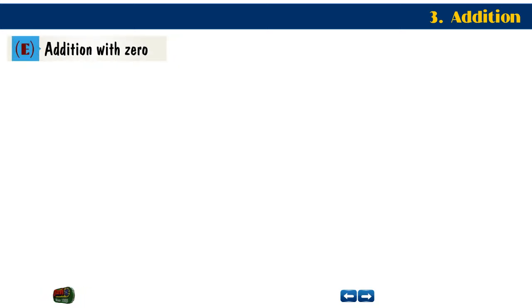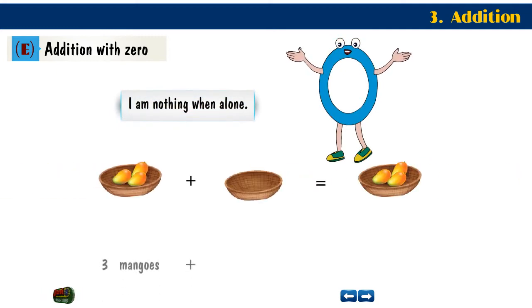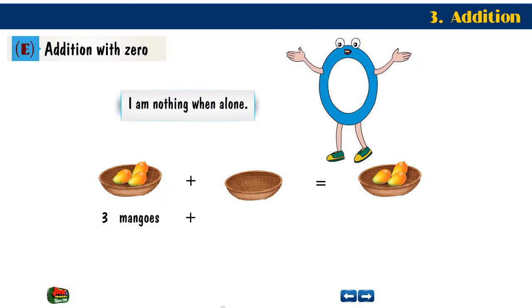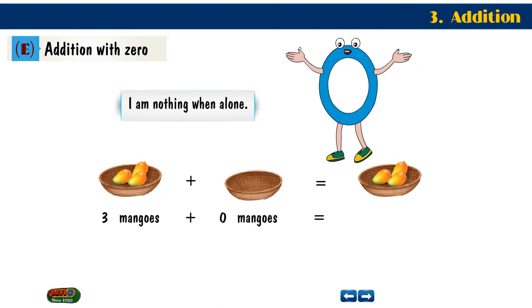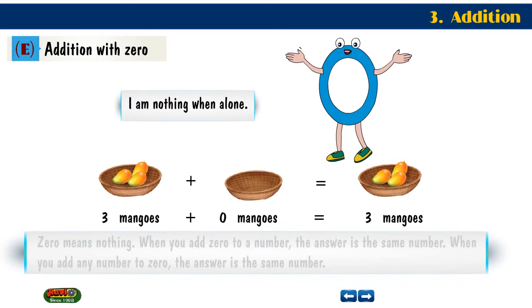Addition with zero. I am nothing when alone. Three mangoes plus zero mangoes is equal to three mangoes. Zero means nothing.